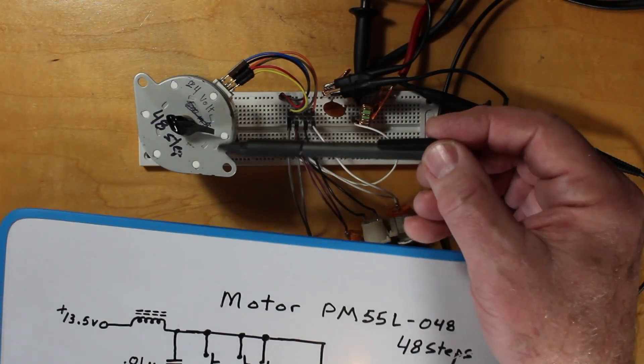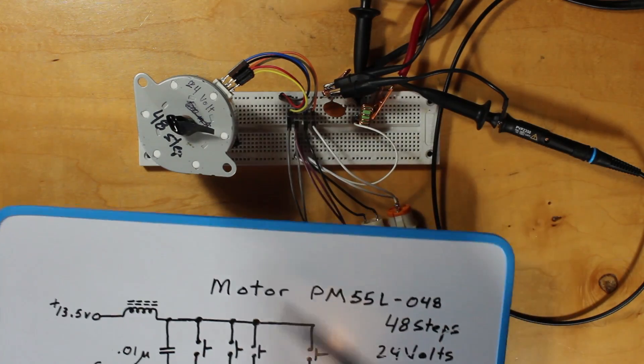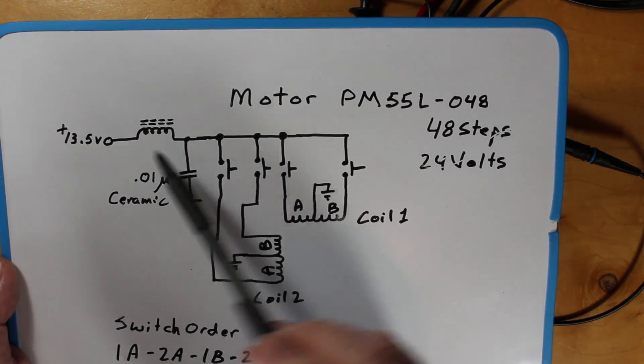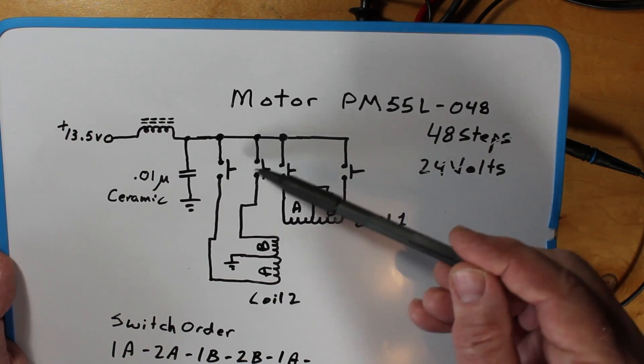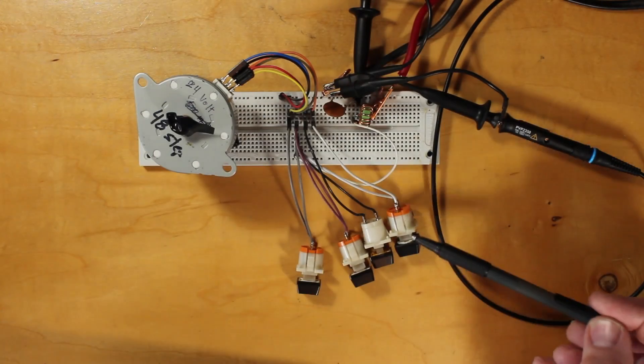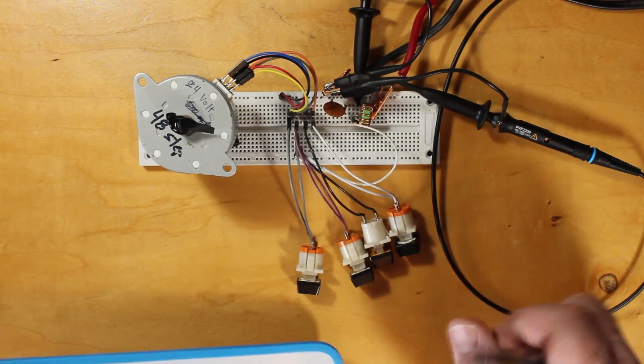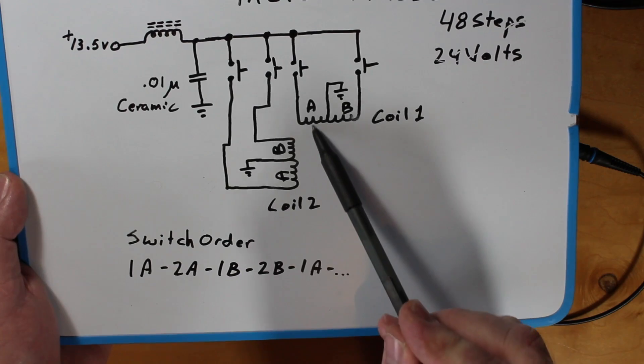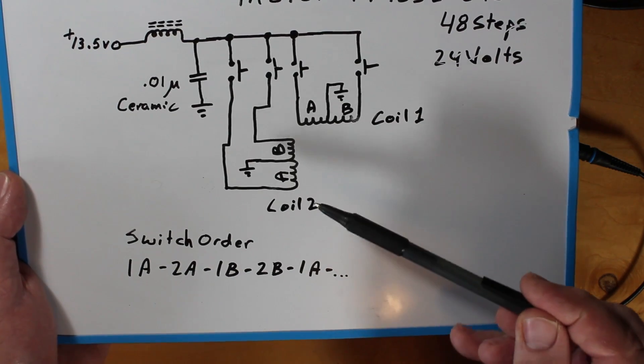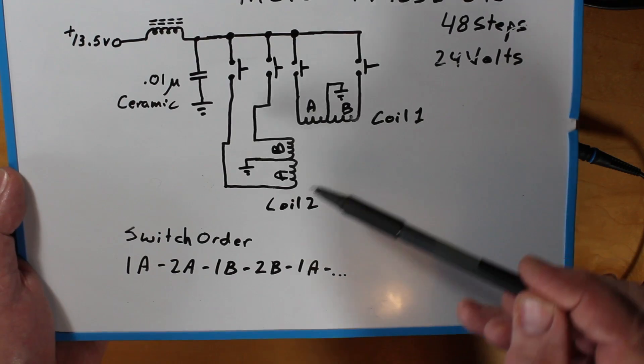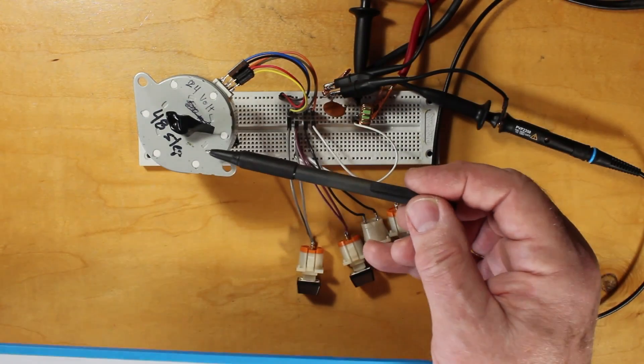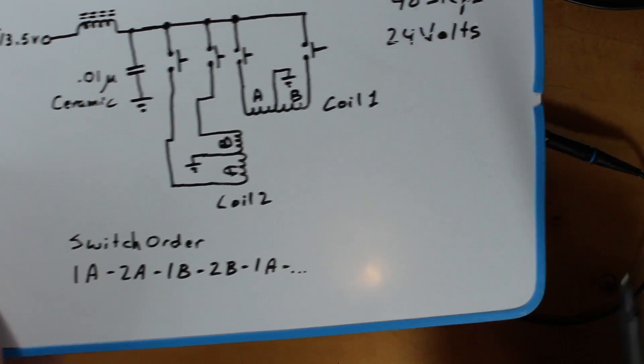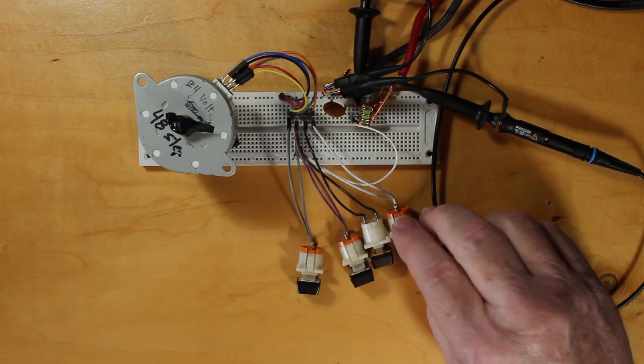Now this stepper motor here is a six-wire stepper motor. So the two center-tapped coils here have gone to ground. We're using positive voltage. We have four switches. These four switches are not in this particular order. I've set these up so that when we operate this thing we're going to energize coil 1A and then 2A and then 1B and 2B. You have to play with this a little bit to figure out which way these coils go and when you start hitting the buttons the motor starts to spin.